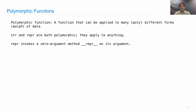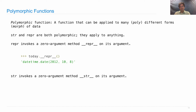repr invokes the special method name __repr__. So we can get the same behavior if we take today and invoke its __repr__ method, then we get the repr string. repr is actually a really simple function — it just asks the object that's passed into it how it's supposed to be represented. And str invokes a zero-argument method, __str__. So for the today object, we invoke its __str__ method and we get back the hyphenated human-readable representation of that date.